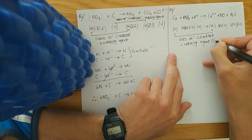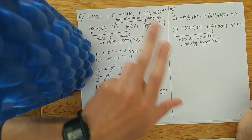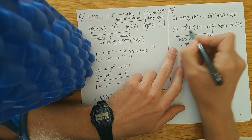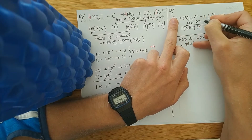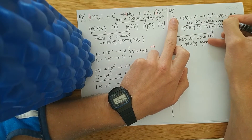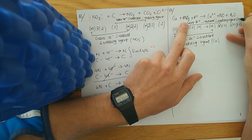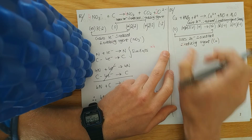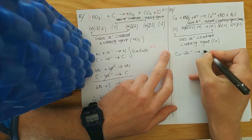Nitrogen goes from plus five to plus two — a reduction, so it gains three electrons, therefore reduced by OIL RIG, therefore the oxidising agent. The oxidising agent is HNO3 — nitric acid.